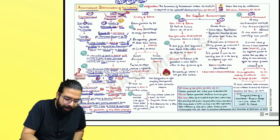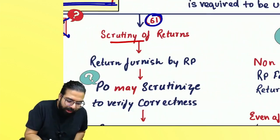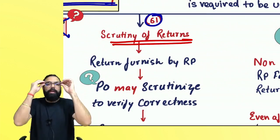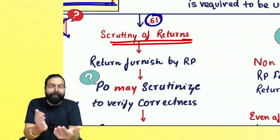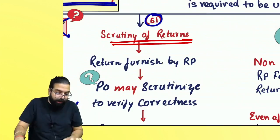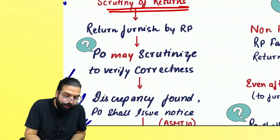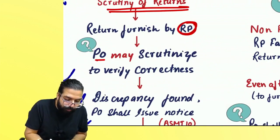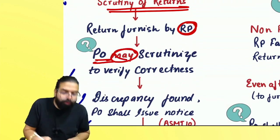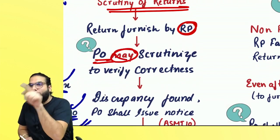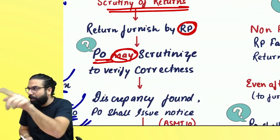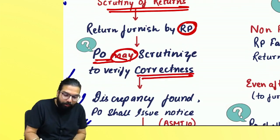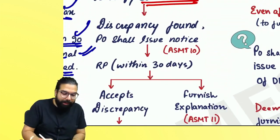The next one is scrutiny of return. You filed your return and the officer is scrutinizing it. The registered person has filed his return and the proper officer may scrutinize — it is not mandatory. If he wants, he can scrutinize your return to verify its correctness. If a discrepancy is found, he will issue a notice in ASMT-10.